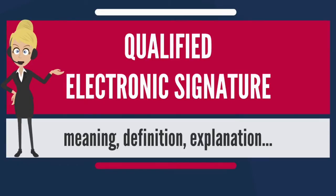First, the signatory must be linked and uniquely identified to the signature. Second, the data used to create the signature must be under the sole control of the signatory. And last, it must have the ability to identify if the data accompanying the signature has been tampered with since the signing of the message. It is important to note that creating a qualified electronic signature is more than merely adding a qualified certificate to an advanced electronic signature.